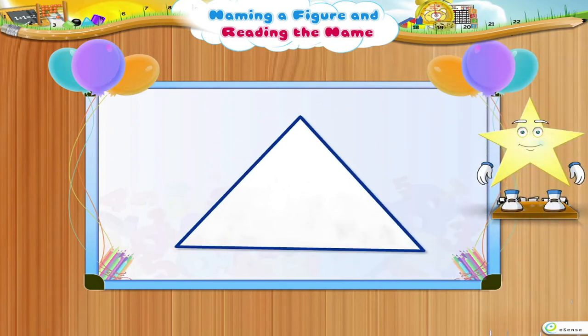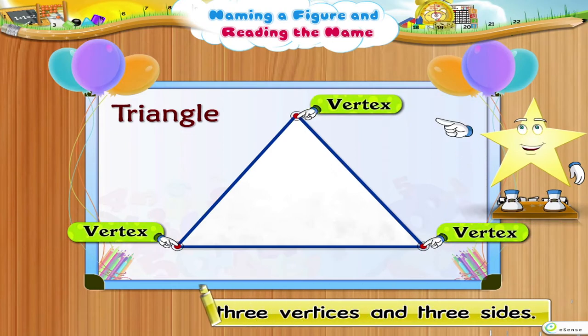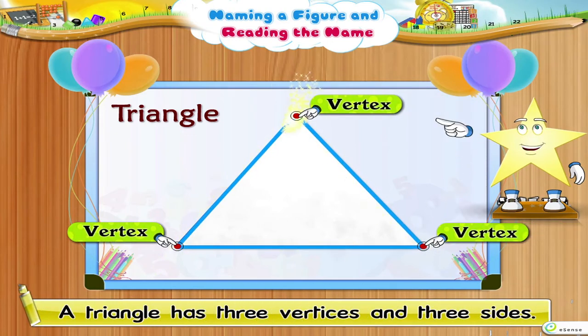Take a look at this triangle Starry. You know that a triangle has three vertices and three sides. To name a triangle, we have to name its vertices.